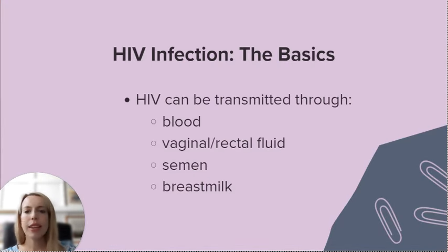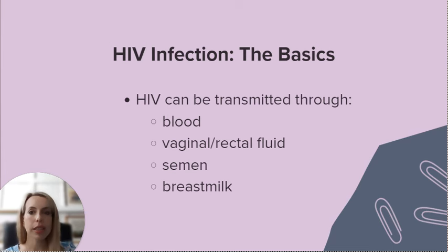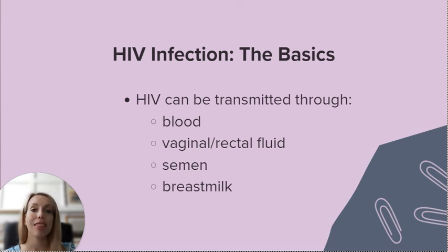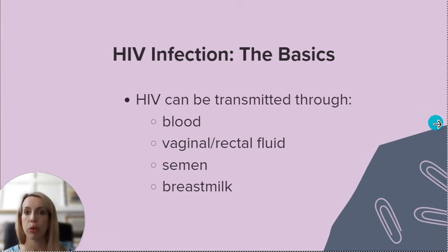HIV is transmitted through exposure to infected blood, vaginal or rectal fluids, semen, and also breast milk. After the initial acute phase of HIV infection, which can present with flu-like symptoms, many patients will go on to be asymptomatic for years, and this is why screening is so critical.